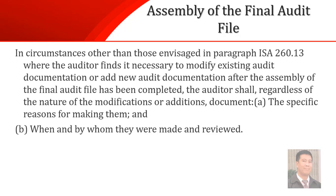In circumstances where the auditor finds it necessary to modify existing audit documentation or add new audit documentation after the assembly of the final audit file has been completed, the auditor, regardless of the nature of modification or addition, should document the specific reason for making them, and when and by whom they were made and reviewed. Meaning, if you need to change the audit documentation after the final audit file has been completed, you need to document why you are changing it and when and who made or reviewed it.